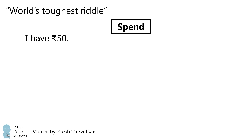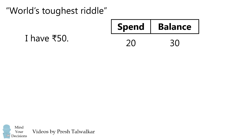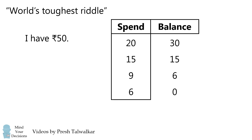I have 50 rupees. Let's do some accounting on how I spend it. If I spend 20, I'll have a balance of 30. If I then spend 15, I'll have a balance of 15. If I then spend 9, I'll have a balance of 6. And if I spend that 6, I'll have a balance of 0. The total amount in the spend column will be 50.